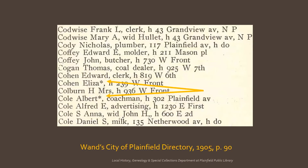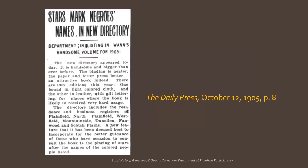For several years in the local history department, we were unable to give a definite answer when asked about the asterisks found in some directories. They aren't explained in the key to abbreviations or any other place in the directories that we could find. Finally, an article in the Daily Press confirmed our suspicions that the asterisks were indicating race. The article states that it has been deemed best to place stars after the names of the colored people listed.